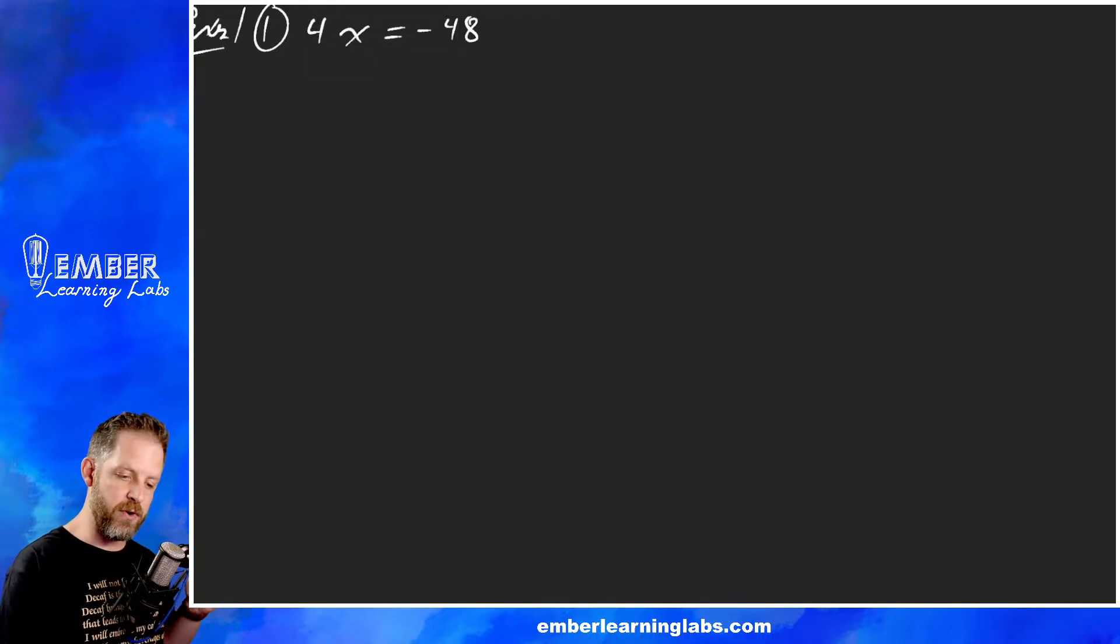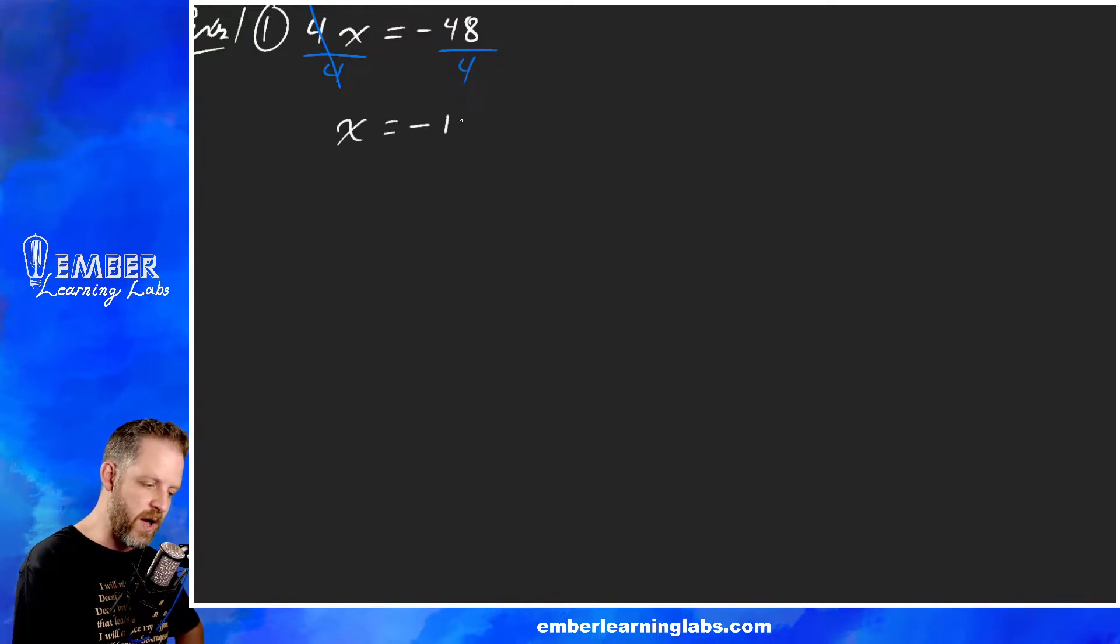We need to remember that if we've got a number right next to the x, then that's multiplication. So this four is multiplied times the x. The opposite of multiplication is division, so we're going to divide four on both sides. Four divided by four is one, so that cancels leaving us with just x. Negative 48 divided by positive four is negative 12. Negative divided by positive is a negative, signs are different comes out negative. Easy peasy, right?